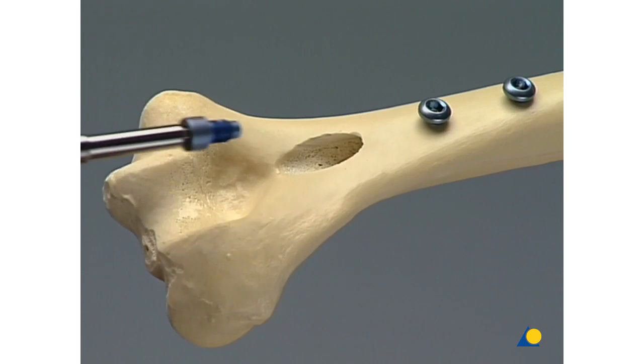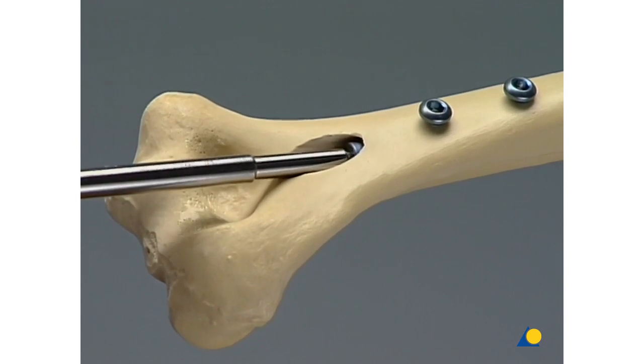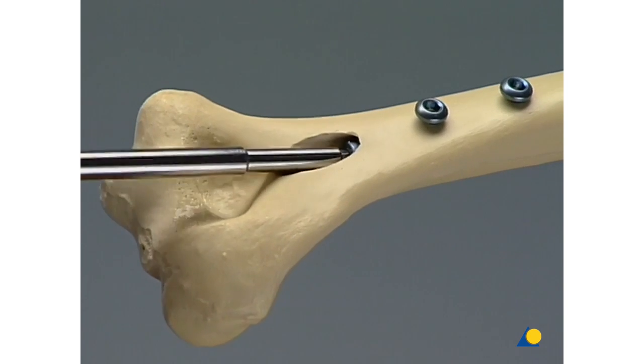After removal of the insertion handle, we insert the end cap. Proximal locking using the standard freehand technique or with a radiolucent drive is not practiced in this exercise.